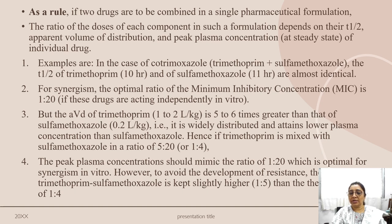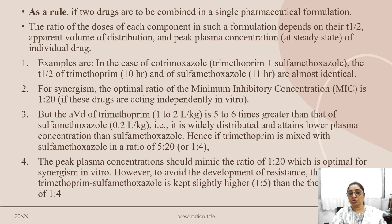However, the apparent volume of distribution of trimethoprim is 1–2 liters per kg, which is 5 to 6 times higher than sulfamethoxazole at 0.2 liters per kg. Trimethoprim is widely distributed and attains a lower plasma concentration than sulfamethoxazole. Hence, if trimethoprim is mixed with sulfamethoxazole, the ratio should be adjusted accordingly.